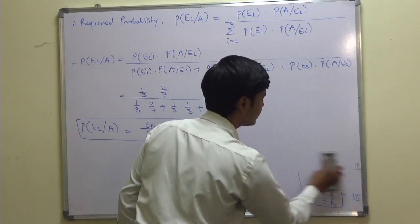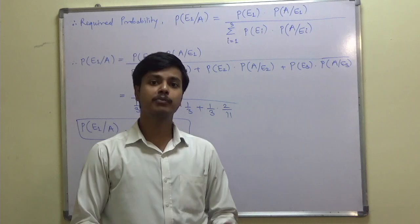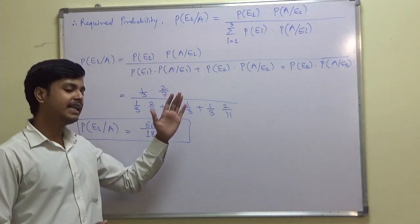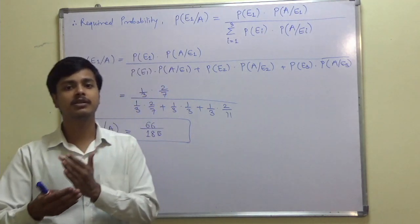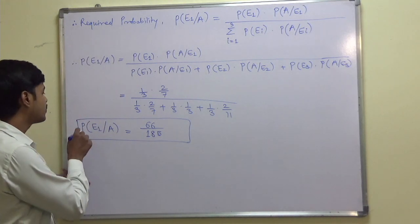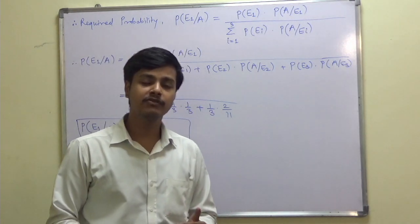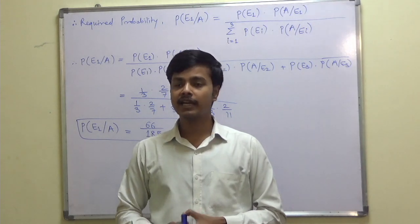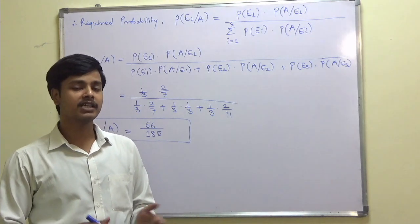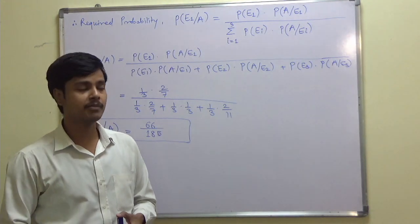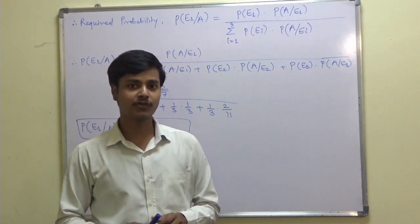The problem asked us to find the probability that the balls come from urn 1. You can take the same problem and also find probability of E2 given A or probability of E3 given A for urns 2 and 3. We will continue with one more example on the same topic and then move to a new topic. Thank you for watching this learning video.